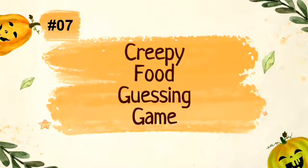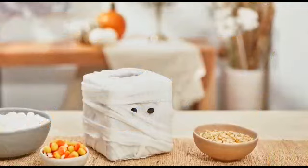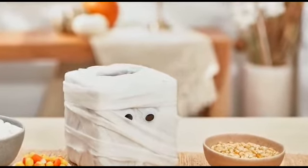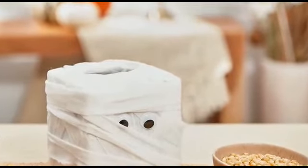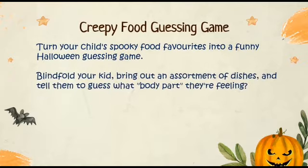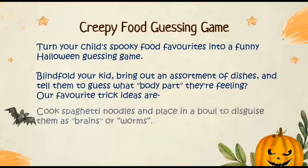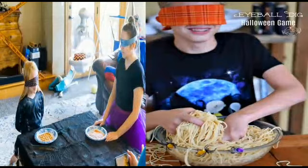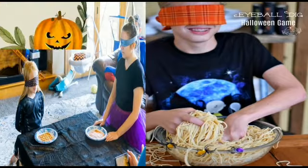Idea number seven is Creepy Food Guessing Game. Turn your child's spooky food favorites into a funny Halloween guessing game. Blindfold your kids, bring out an assortment of dishes and tell them to guess what body part they are feeling. Cook spaghetti noodles and place them in a bowl to disguise them as brains or worms. Peel grapes or use black olives to make eyeballs. Mini hot dogs are fingers, and halved almonds are fingernails.